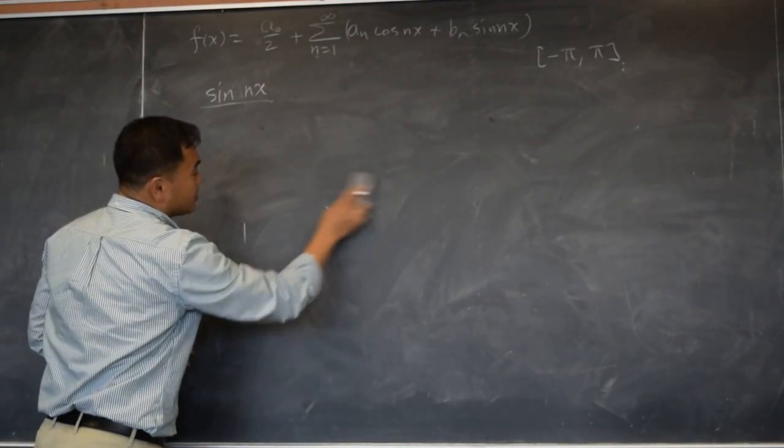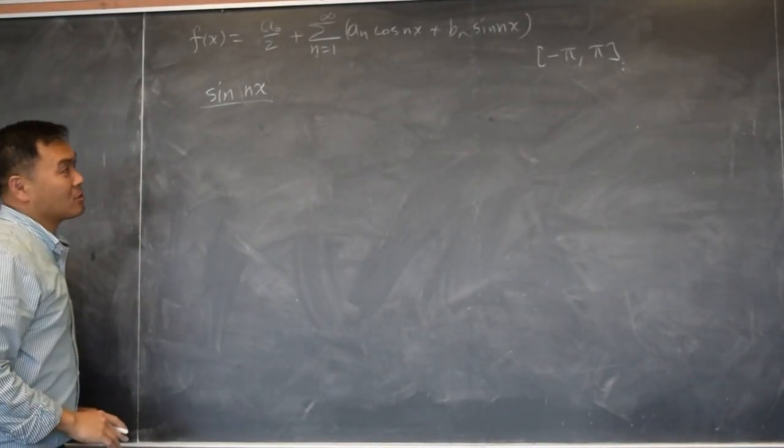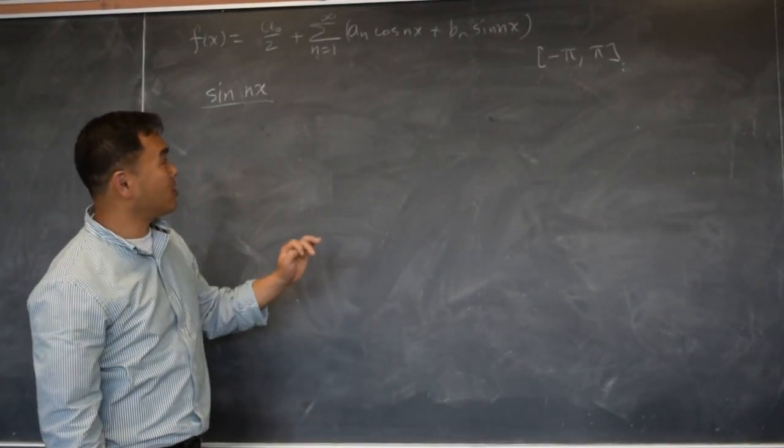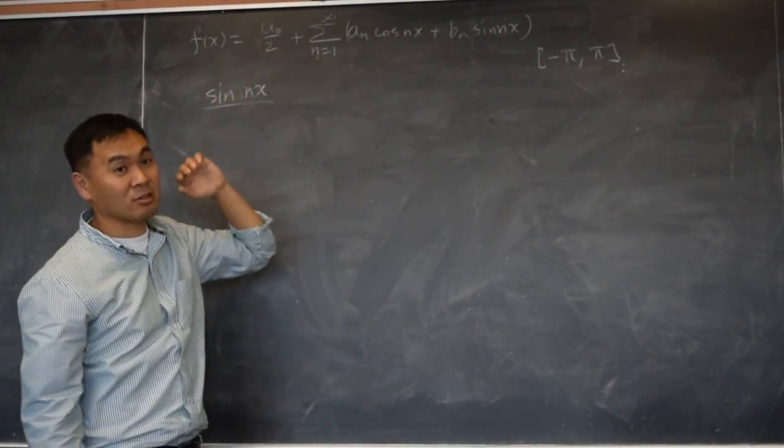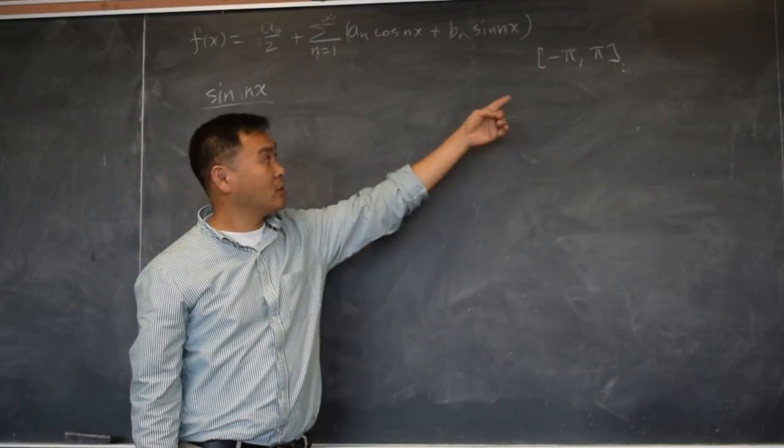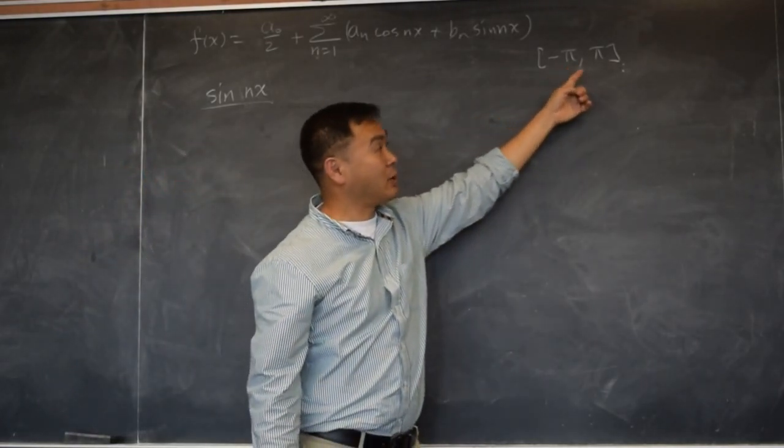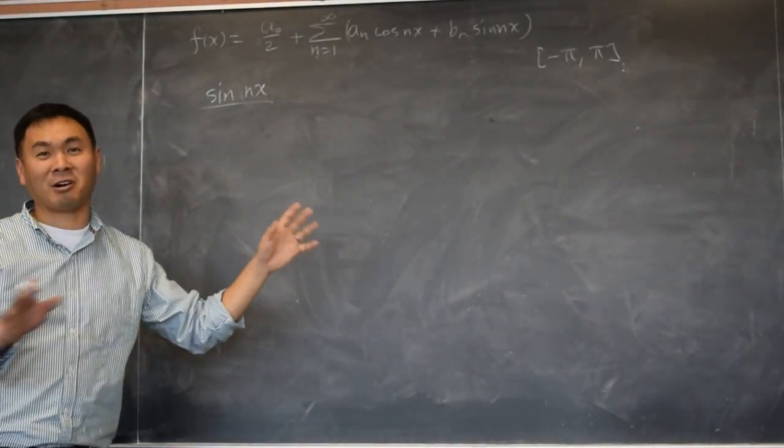So in some higher mathematics, the language that they use for this previous series is they say, oh, sine nx and cosine nx and this constant form orthogonal basis over this domain negative pi to pi in the L2 space. That's like completely math nerd talk. You don't have to understand.